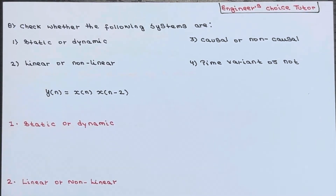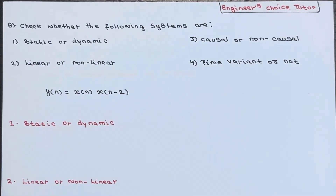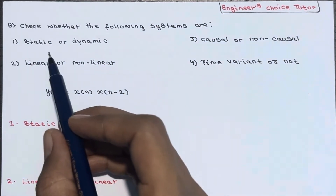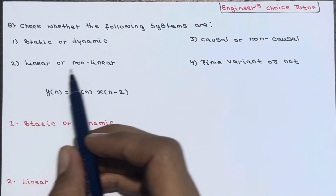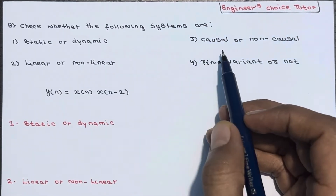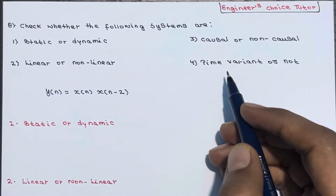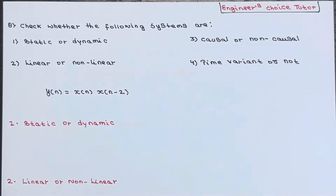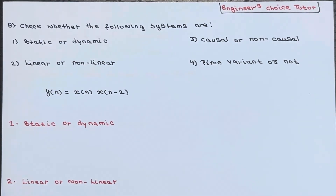In this lecture we will solve another numerical: check whether the following systems are static or dynamic, linear or nonlinear, causal or non-causal, time variant or time invariant. The system equation given is y(n) = x(n) · x(n-2).